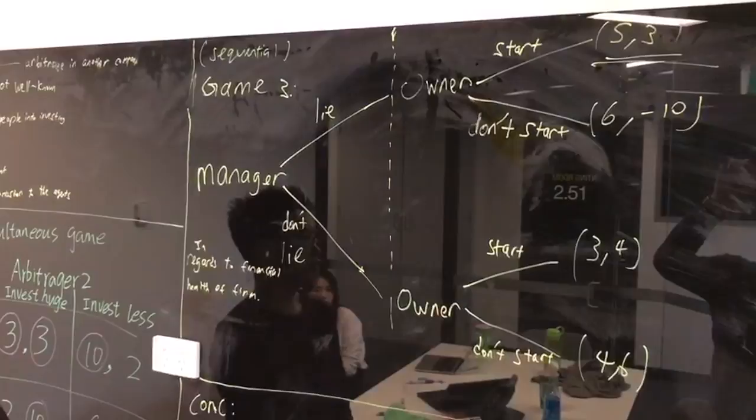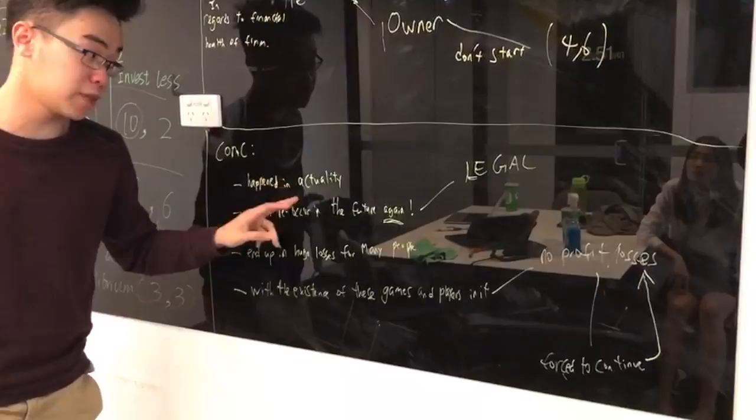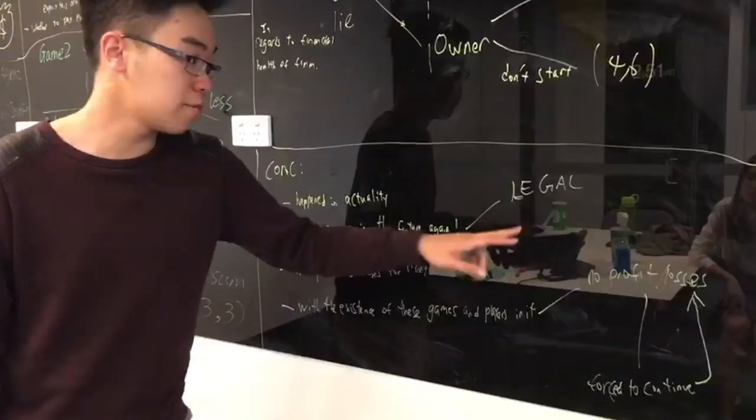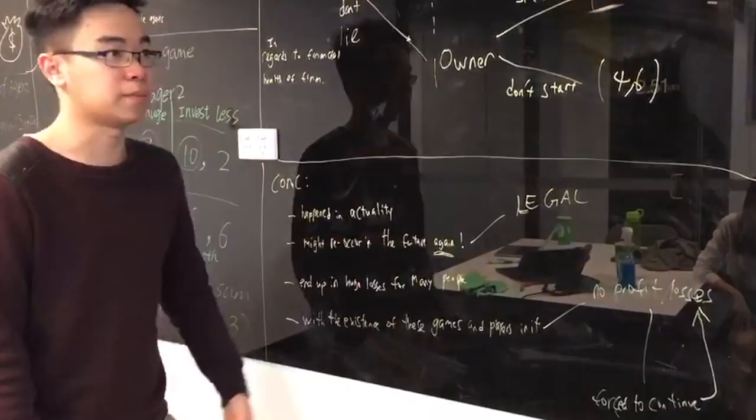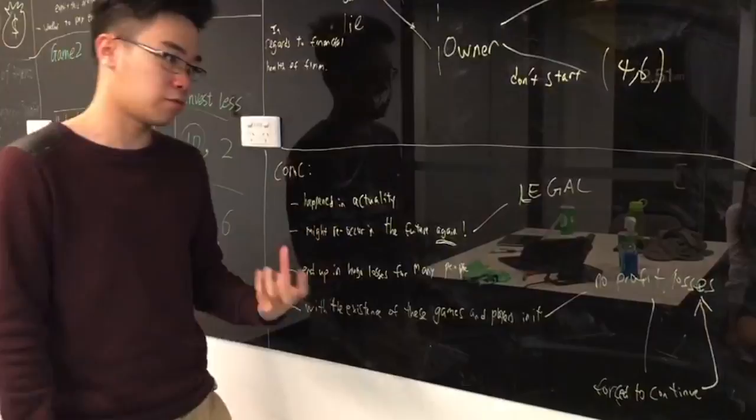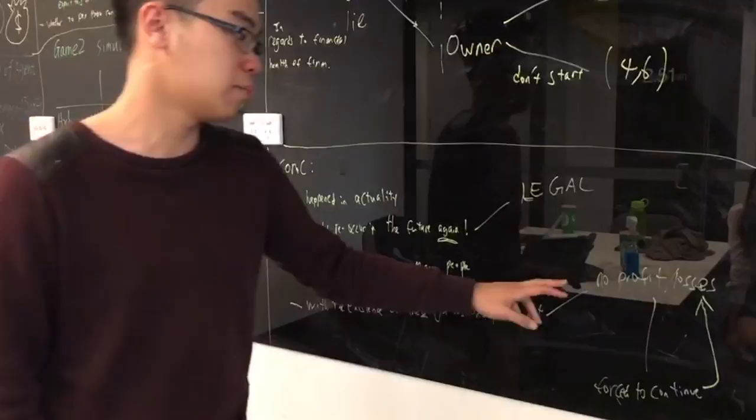In conclusion, all this actually happened in real life. And yes, according to these dominant strategies and all what happened, as we explained here, there is a chance that it might happen in the future again because everything is under legal boundaries. They are not being caught or being punished trying to make people lose money. It ends up with many losses, people losing lots of money. And with the existence of these players and the greed and these games, the INFX doesn't stand to make much profit. Or even they might have some losses in the company. However, they are forced to continue to try and salvage their losses.